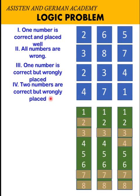Next, based on statement number 4, two numbers are correct but wrongly placed. So if 4 is correct, 4 could not be in the first column. So let's eliminate 4 here. 7 is already eliminated in all columns. And 1 could not be in the last column.